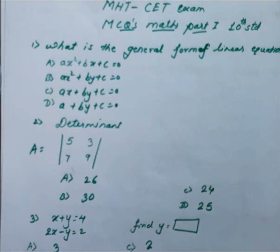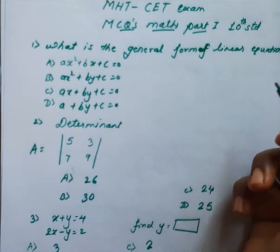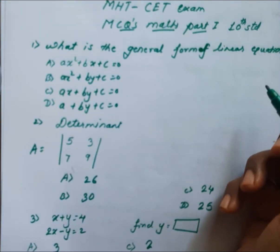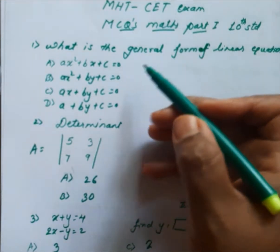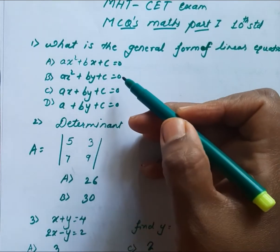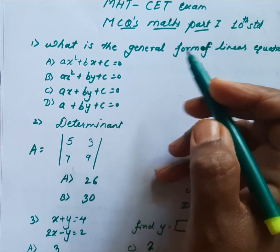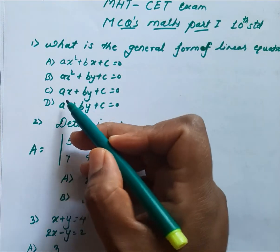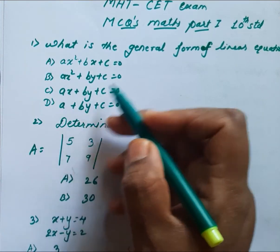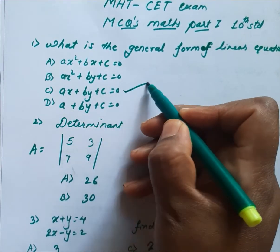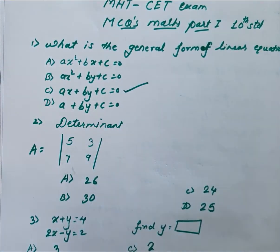First question: what is the general form of the linear equation? You will be confused between the options A, B, C, D, but the correct answer is AX + BY + C = 0.